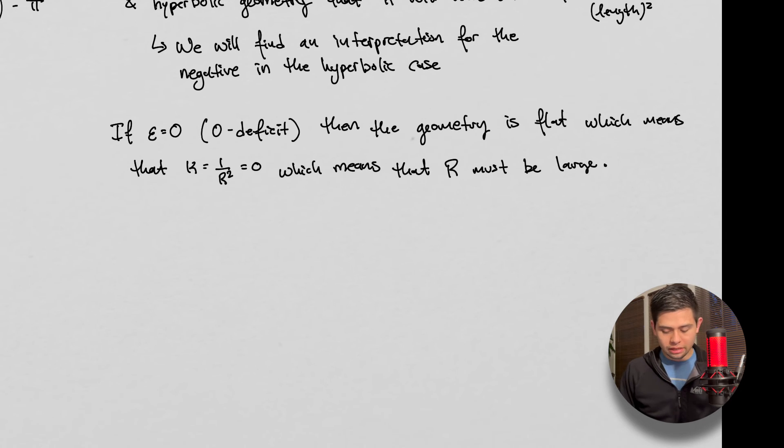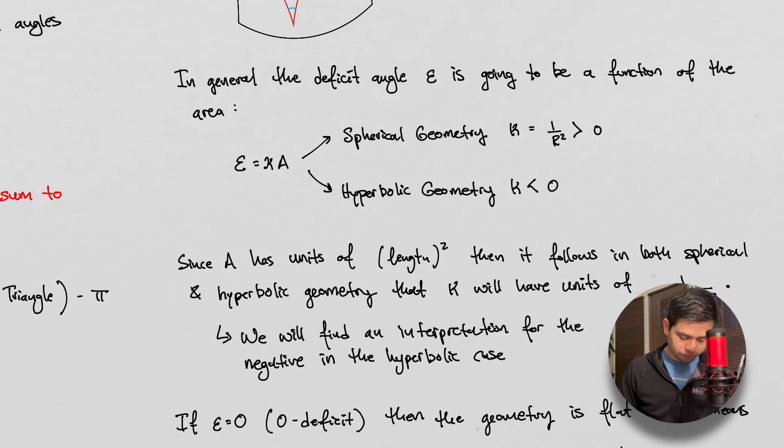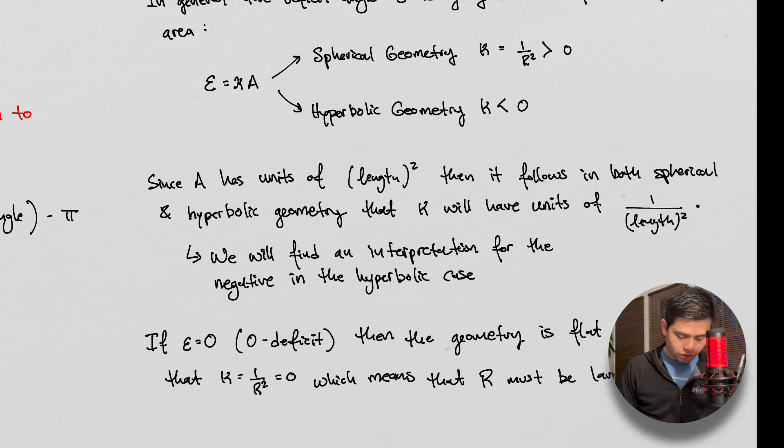And last but not least, again, this is a short video, this is a very soft introduction into differential geometry. But if epsilon is zero, then the geometry is going to be flat. This means that kappa is one over r squared, which is equal to zero, which means that r must be large. So if we go up here, our deficit, if there's zero deficit in the angle, that means epsilon is zero.